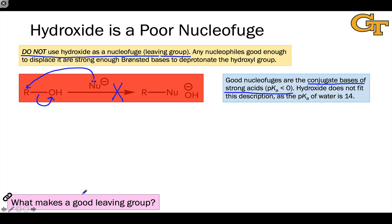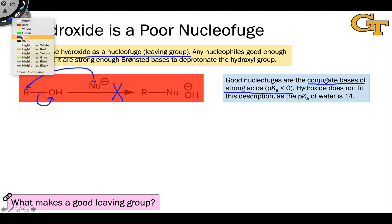If you need a refresher on this, check out my video on what makes a good leaving group from Chem 2311. The long and short of it is that hydroxide is not a good leaving group.